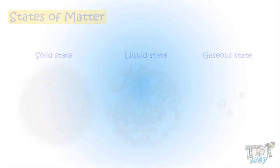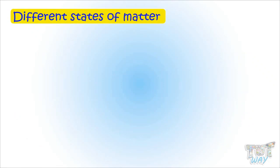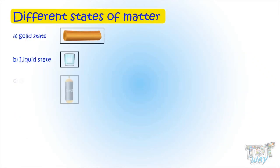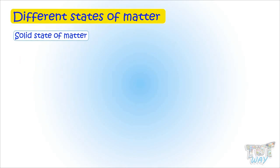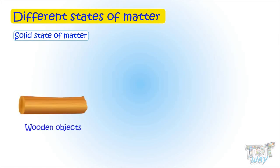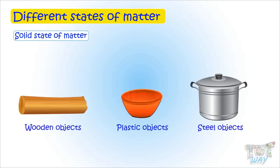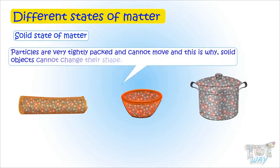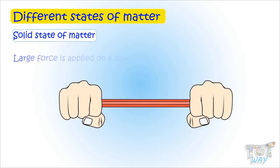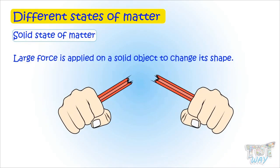Now we will learn about the different states of matter: solid, liquid, and gas. First, let's learn about the solid state of matter. Matter in a solid state — like wooden objects, plastic objects, and steel objects — has particles that are very tightly packed and cannot move at all. That is why solid objects cannot change shape and remain in the same shape unless a large force is applied to make them change shape.